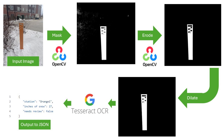This finishes the pre-processing portion. This pre-processed image is then fed into the Tesseract text detection algorithm, which outputs each number on the stake. The minimum visible value would be the depth of snow at a given station. This depth value is then passed to a JSON file along with the station info and whether or not an image or depth needs to be manually reviewed.